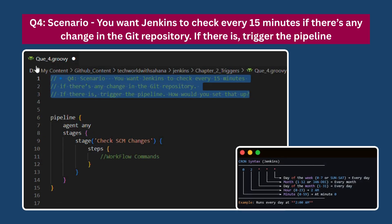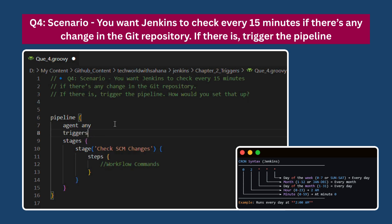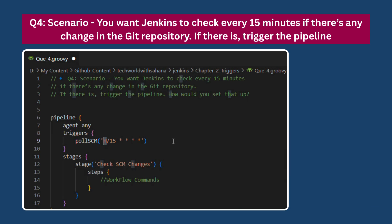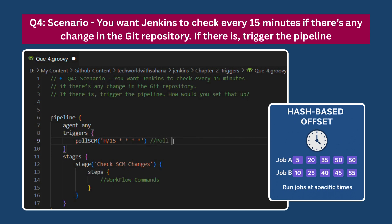Moving on with scenario number 4: You want Jenkins to check every 15 minutes if there's any change in the git repository, and if there is, trigger the pipeline. In this scenario, we use pollSCM to automatically check for code changes. Inside the triggers block, we use the expression 'H/15 * * * *', which means Jenkins will poll the SCM every 15 minutes. The 'H' (hash) is used to distribute job start times to avoid overloading Jenkins resources — so if two heavy jobs are scheduled at the same interval, using H ensures they don't start at the exact same time. One job might run at 5 minutes past the hour and the other at 10 minutes, both repeating every 15 minutes, reducing resource contention and improving performance.